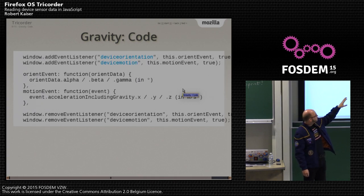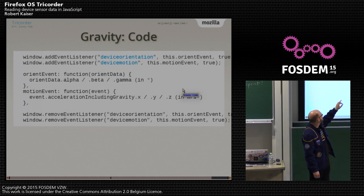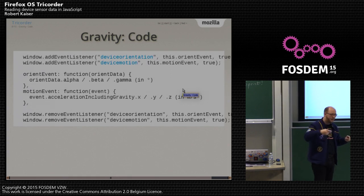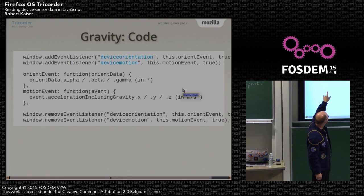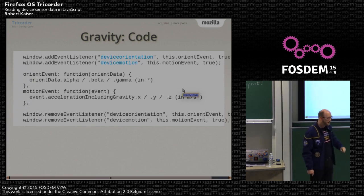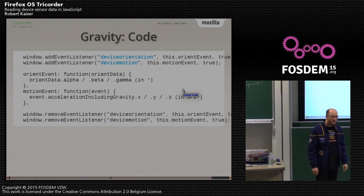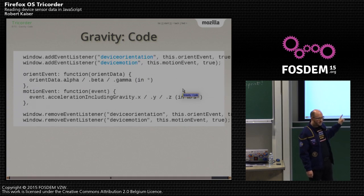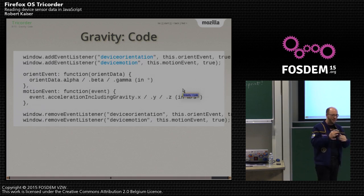The function being called for the orientation event — I never remember what the third argument (true) is, but everybody specifies it everywhere so I always have it in there. Orientation is the magnetometer: the orientation of the device with angles in all three directions. Motion is the accelerometer. The orient event gives you orient data with alpha, beta, gamma angles in degrees. The directions of those angles are described on a pretty good MDN page with graphics — it's best to look them up there rather than describing it here.